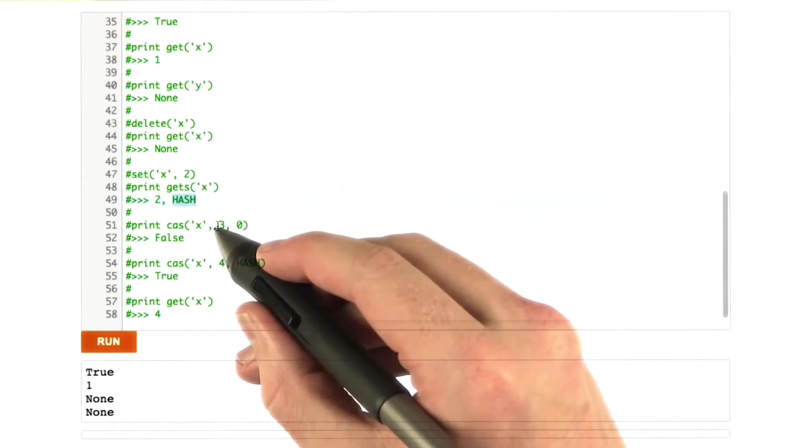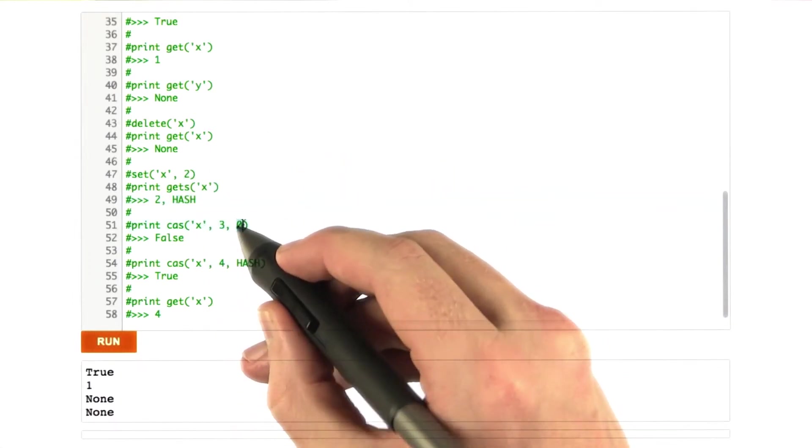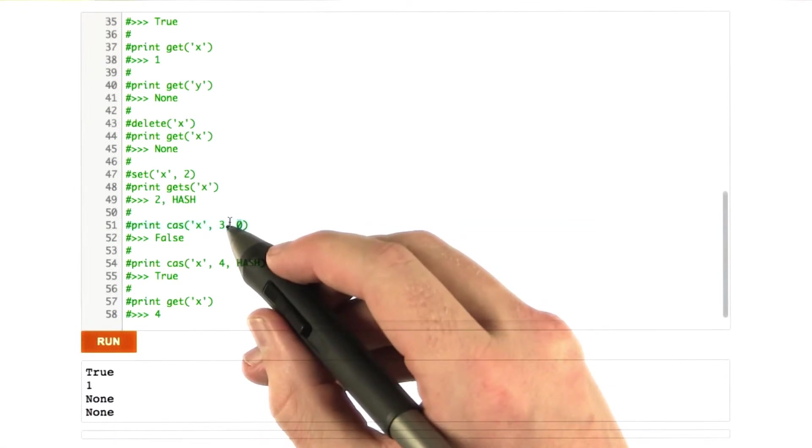And then we're going to call cas, trying to set x to 3. And in this case, I'm going to send in just 0, which I know won't be the hash.